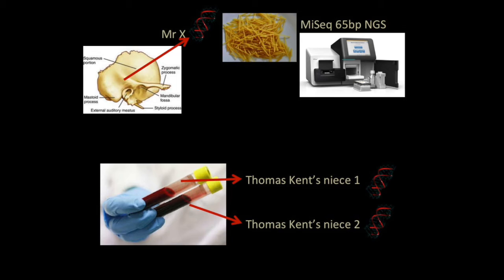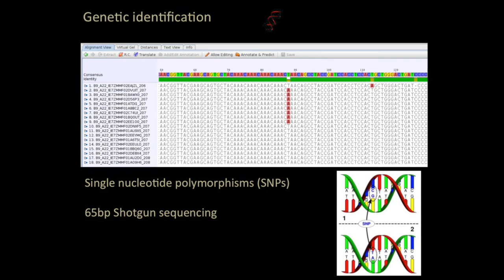We also realized that Thomas Kent had a brother who had offspring. There were nieces around, and two nieces were actually driving this whole Thomas Kent identification. We managed to get blood samples from the two nieces. It's not supposed to be 100% matched, because they're not identical twins to Thomas Kent — they're nieces. Using Queller and Goodnight's symmetric RXY, they should have 25% relatedness to Mr. X if Mr. X is Thomas Kent.